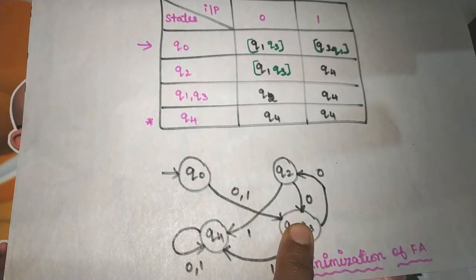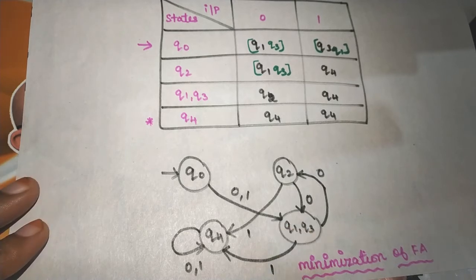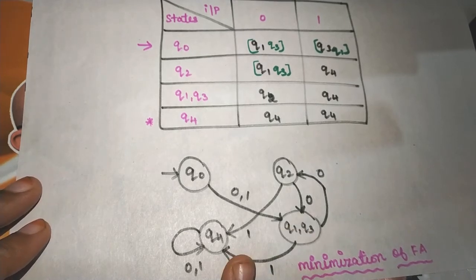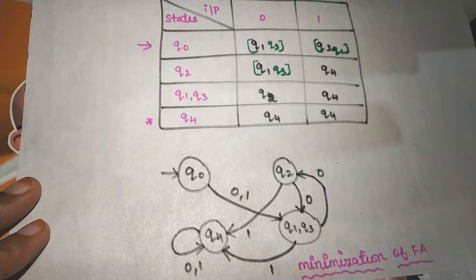This is the minimization of finite automata. Originally there were 5 states, and after minimization — with Q1 and Q3 merged — we have 4 states. If you want to understand this better, you can refer to this video for a clearer idea. Thank you.